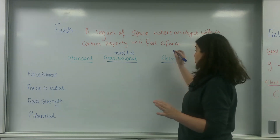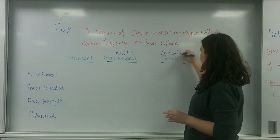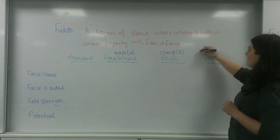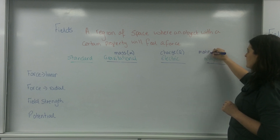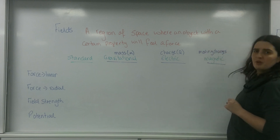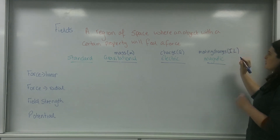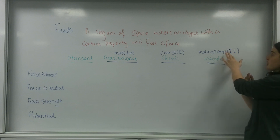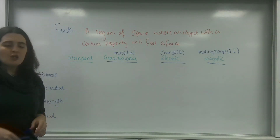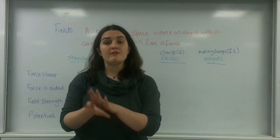For electric fields, the property is charge, which I'm going to call Q. And for magnetic fields, it is moving charges, also known as I times L — a current moving along a length.